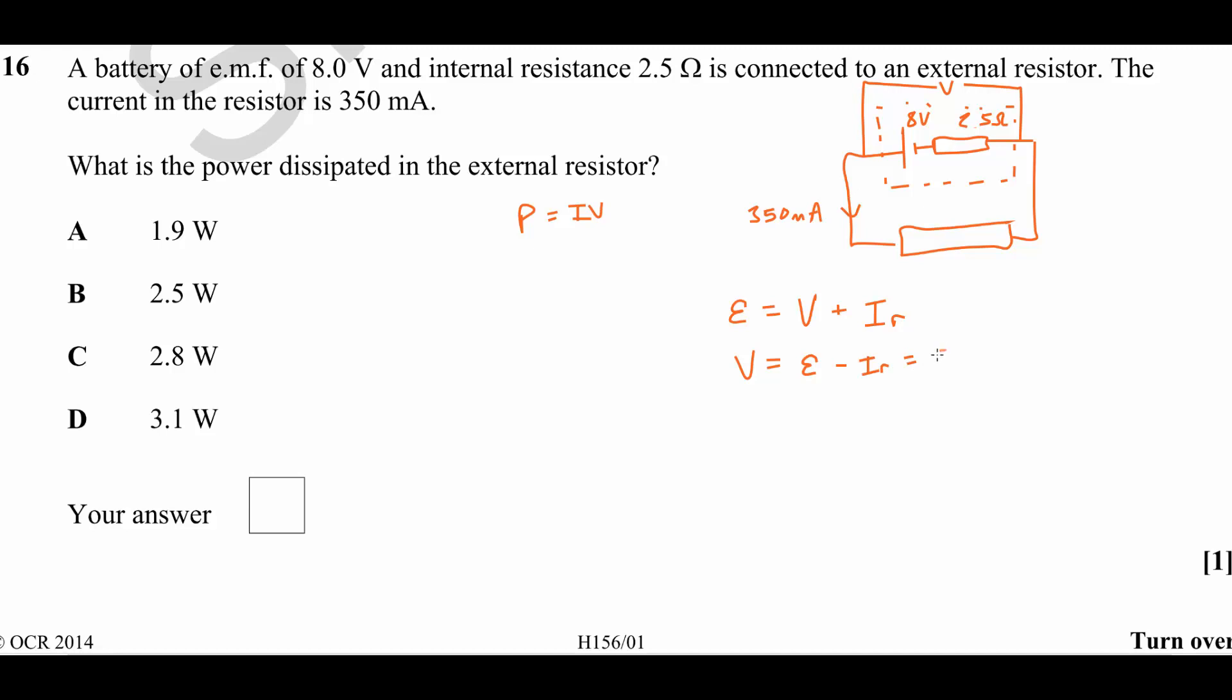The EMF is 8 volts. The current is 0.35 amps, 350 milliamps, multiplied by 2.5 ohms, which gives us a terminal PD of 7.125 volts.